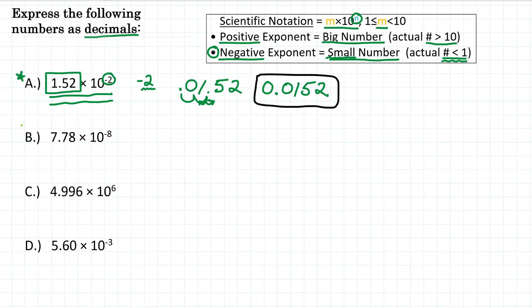Let's move on to B. We have 7.78 times 10 to the negative 8 power. The first part of the scientific notation is 7.78. Looking at our exponent, we have negative 8, so we're going to move the decimal place 8 places. Because it's negative, we're making this a small number, so like problem A, we're going to go to the left — 1, 2, 3, 4, 5, 6, 7, 8 places to the left.